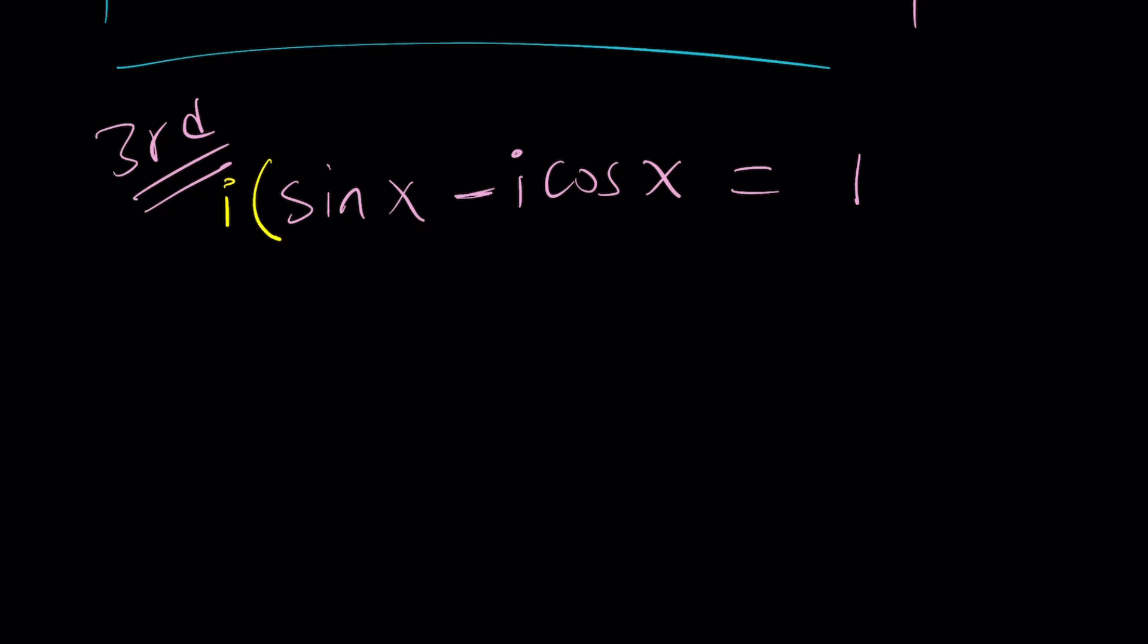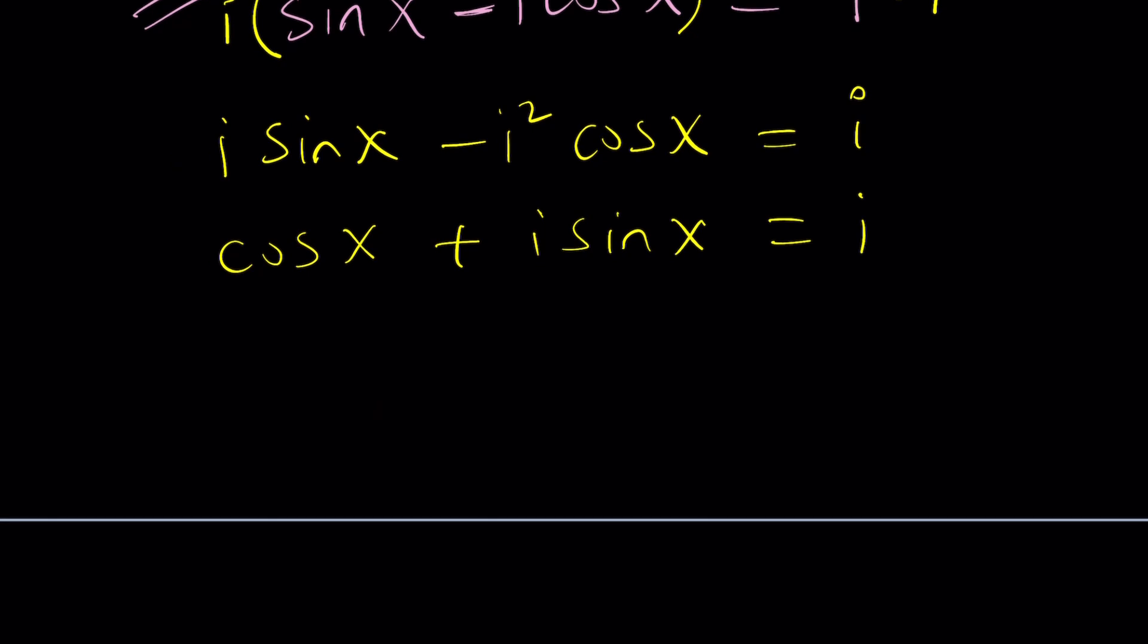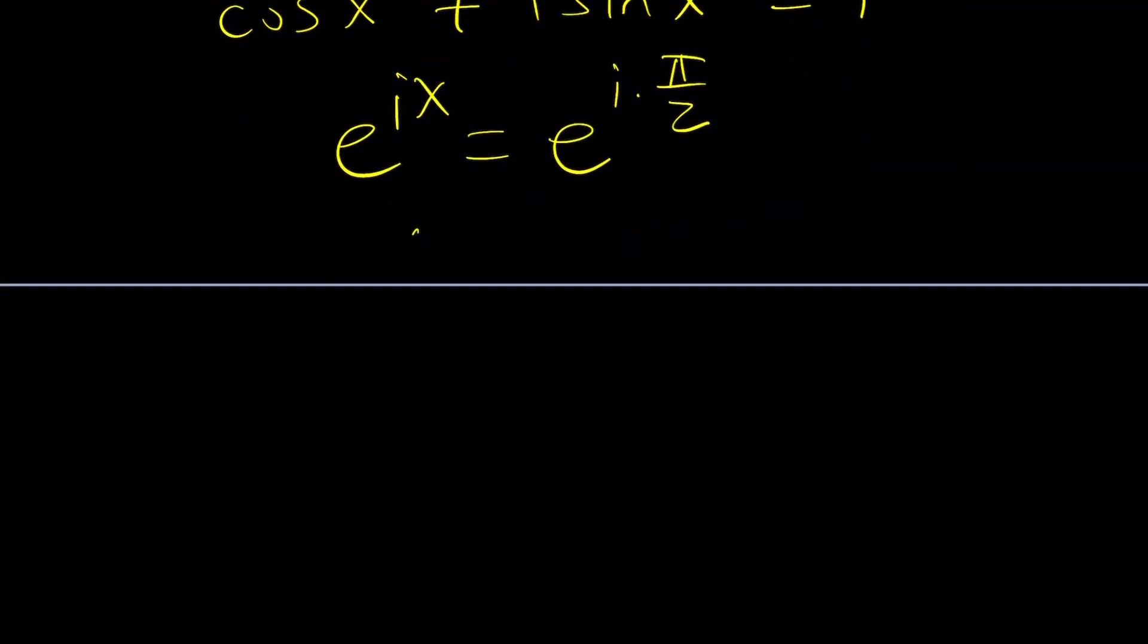Let's go ahead and do it. Multiply both sides by i. And yay. That's going to do it. So, now we get i sine x minus i squared cosine x equals i. Now, i squared is negative 1. So, this is going to be i sine x plus cosine x or cosine x plus i sine x equals i. And then, as you know, this is e to the power i x. And i can be written as e to the power i pi over 2. From here, x should be pi over 2. But don't forget to add multiples of 2 pi. And you are all set.